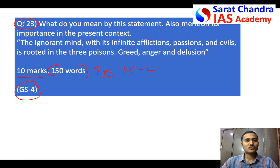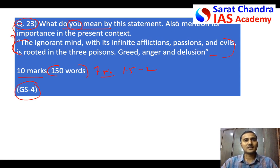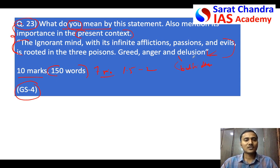These types of questions are common in the ethics exam, where they give you a quotation and ask you to explain what you mean by the statement — not what the person who gave the quotation means by it. You can write whatever you understand from it. Then, in the present context, what is the importance of this quotation? This quotation is given by Bodhidharma. If you know that, you can write it; otherwise you can leave it, as they will not give marks for writing who gave the quotation — only for what you mean by it and its importance in the present context.